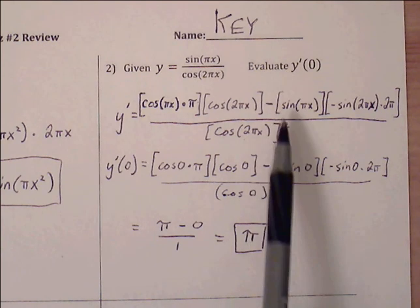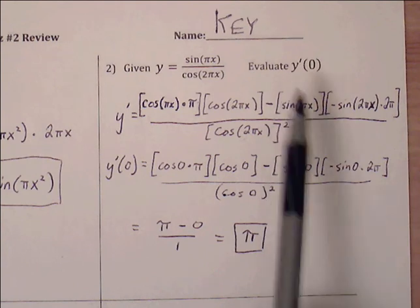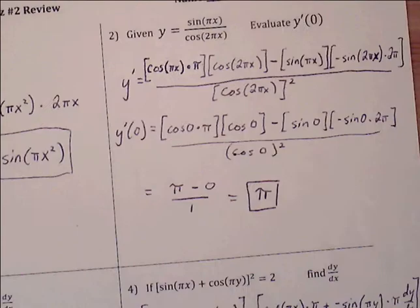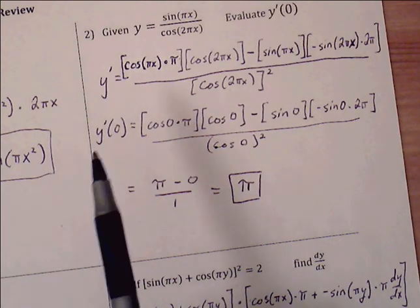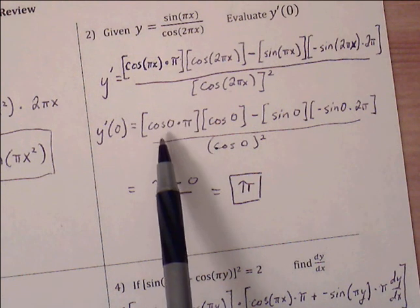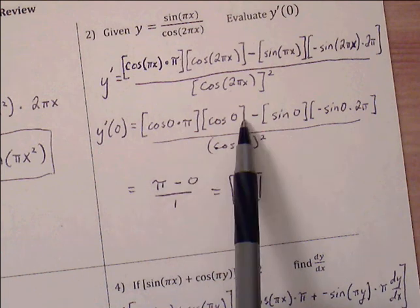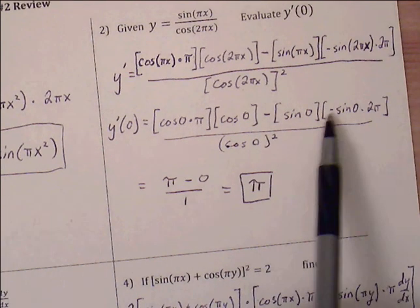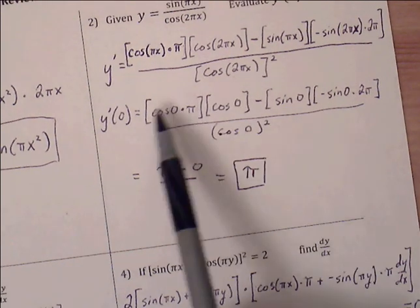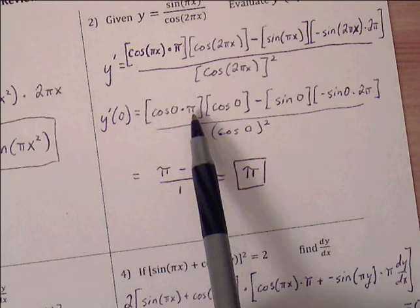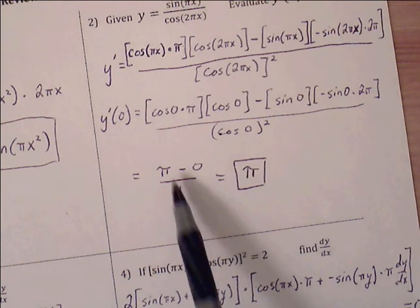Now evaluate y prime at zero by replacing every x with zero. Cosine of zero is 1, and sine of zero goes to zero, so the sine terms drop out. We get 1 times pi times 1 in the numerator, and cosine of zero squared equals 1 in the denominator, giving us pi over 1, which is pi.